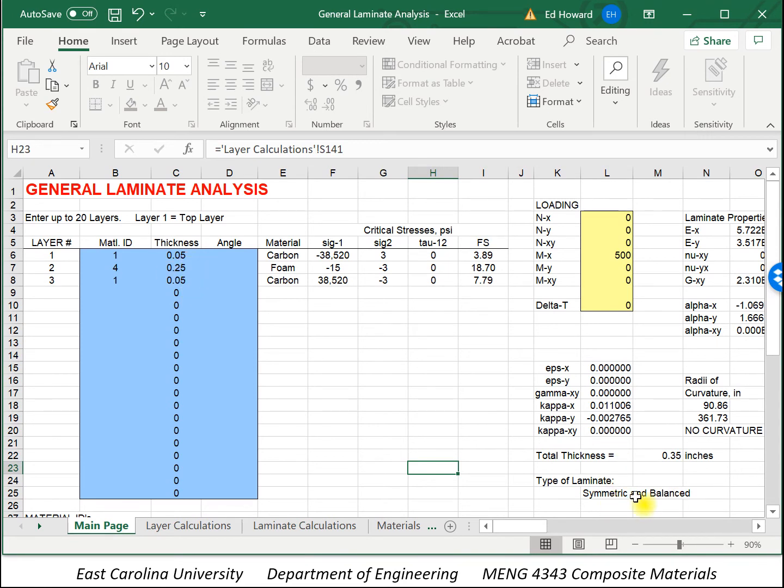And by the way, you see down here it lets us know that, yes, this is a symmetric and balanced laminate with a moment resultant here of 500 inch-pounds per inch.